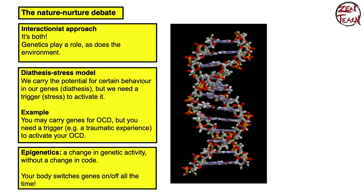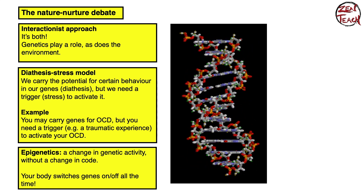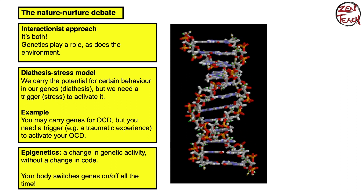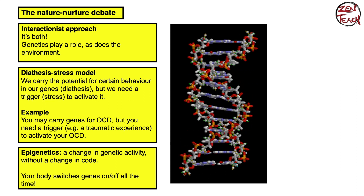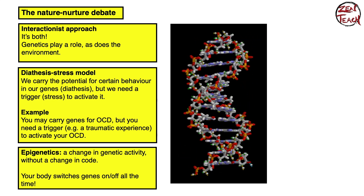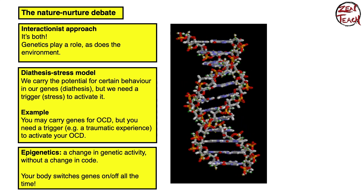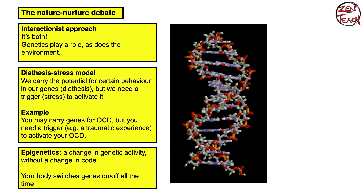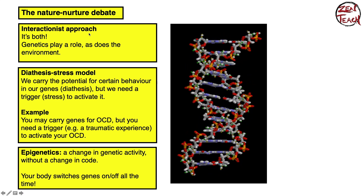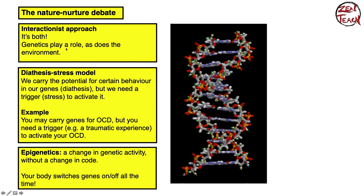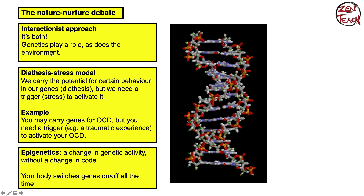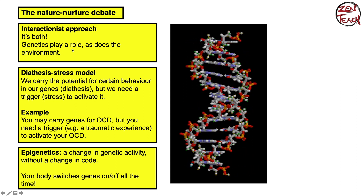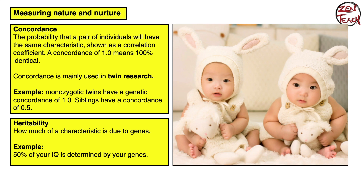Imagine you carry a gene that makes you more likely to develop OCD. You grow up — maybe 10 or 15 years old — and you don't have OCD, but then a traumatic experience happens and that causes you to develop OCD. That gene you had now turns on. Relating that back to the interactionist approach: you have a genetic component — your OCD gene — but you also have an environmental component, and they work together.